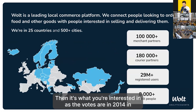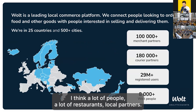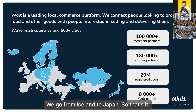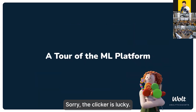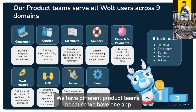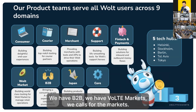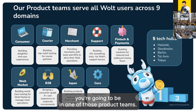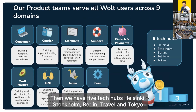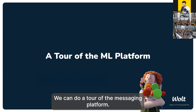Vault has different product teams: one app for consumers, apps for merchants, for couriers, B2B, Vault Market — a lot of different product teams. There are five tech hubs: Helsinki, Stockholm, Berlin, Tel Aviv, and Tokyo. Now for the tour of the machine learning platform.